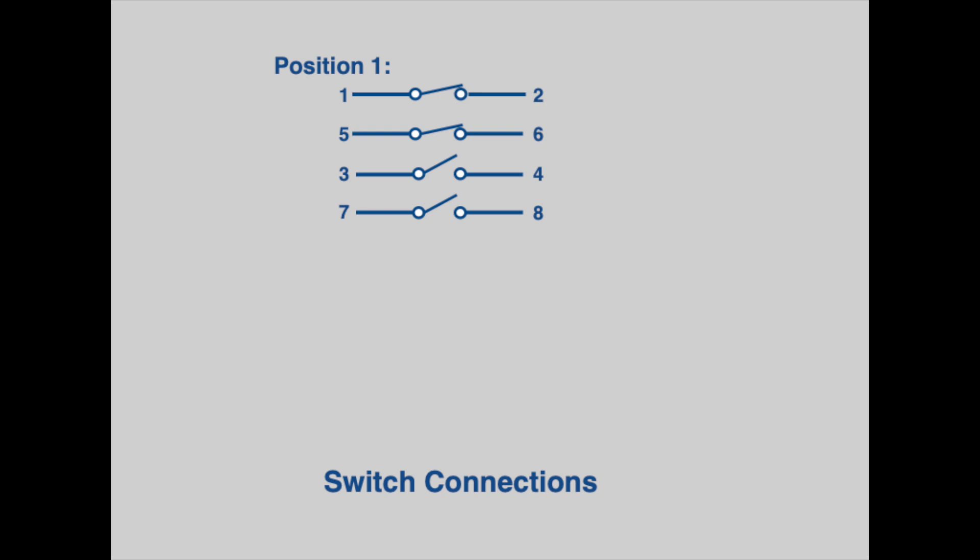This is how the terminals are connected together in the two switch positions. When in position one, terminal one is connected to terminal two, and terminal five is connected to terminal six. When in position two, terminal three is connected to terminal four, and terminal seven is connected to terminal eight.